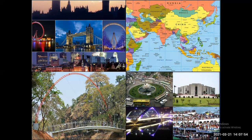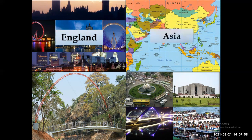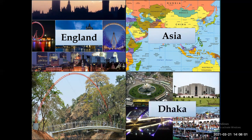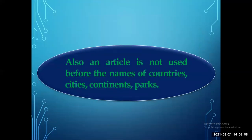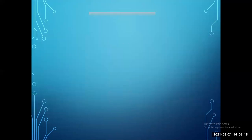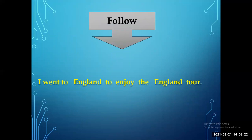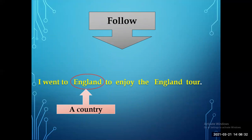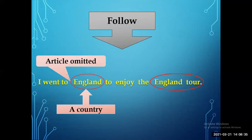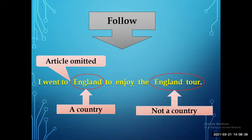Now look at the screen. The first picture is of a country named England. The second is a map of Asia. The third is our capital city Dhaka. The fourth is a lake or park. Article is not used before the names of countries, cities, continents, or parks. For example: 'I went to England to enjoy the England Tour.' For 'England' the country, no article is used. But 'the England Tour' is not a country — that's why we use article 'the.'